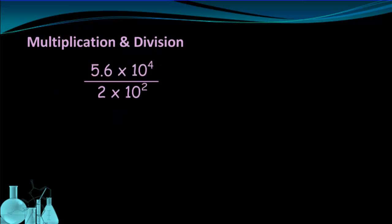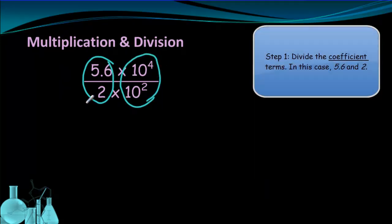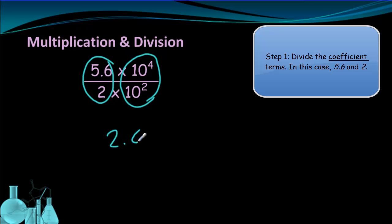Now let's take a look at division. Here in this case, we're dividing two numbers. 5.6 times 10 to the fourth, divided by 2 times 10 to the second. We're going to follow a very similar method to what we just did. First, we're going to divide these two numbers. Then we're going to divide these two terms. So 5.6 divided by 2, we can do that very quickly, is going to give us 2.8.